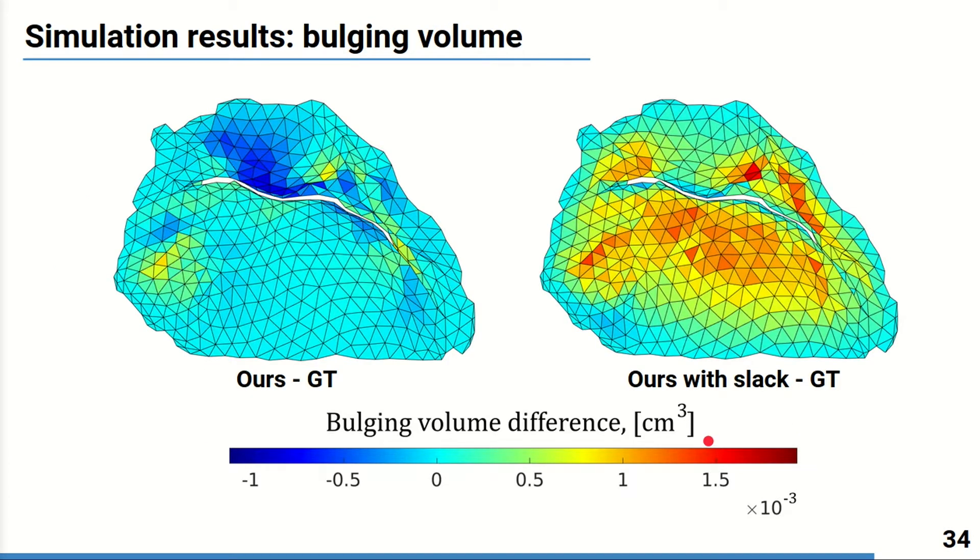Finally the map of bulging volume differences with ground truth chordae for the configurations with and without slack was calculated. We can see that considerably more leaflet bulging is observed for the slack chordae and from this we can conclude that straightening of the chordae can improve the simulation outcome.